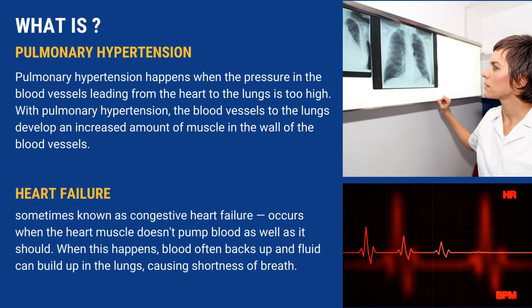Pulmonary hypertension happens when the pressure in the blood vessels leading from the heart to the lungs is too high. With pulmonary hypertension, the blood vessels to the lungs develop an increased amount of muscle in the wall of the blood vessels.